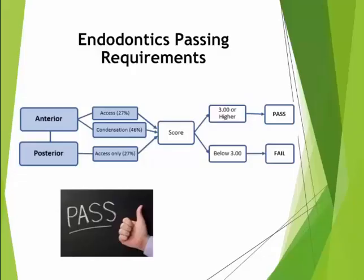This algorithm shows the passing requirements for the endodontic section and the weighting of each component. The score for each category is based on the median score of the three scores determined by examiners. The median grade is then weighted and summed. A score of 3.00 or higher is required to pass the section. This chart can also be viewed in the candidate guide.